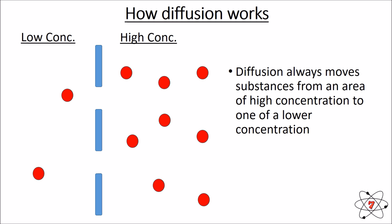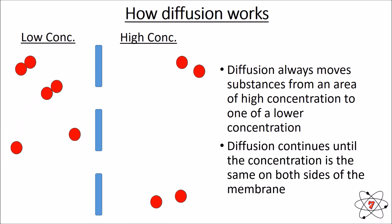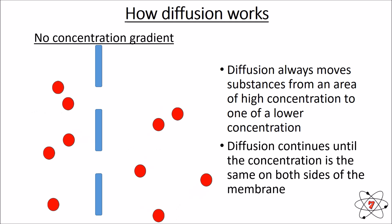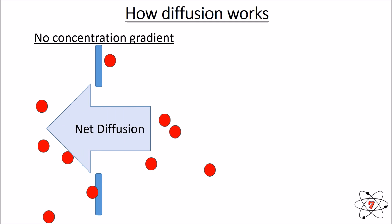If you've covered chemistry already, you'll know this model isn't perfectly accurate — liquids should be touching — but we're using it to model the concept. Particles are always moving and their movement is random. Overall, particles move from where there is a high concentration to where there is a low concentration. Eventually you will end up with the same amount of particles on both sides of the membrane. Net diffusion moves particles from a high concentration to a low concentration.